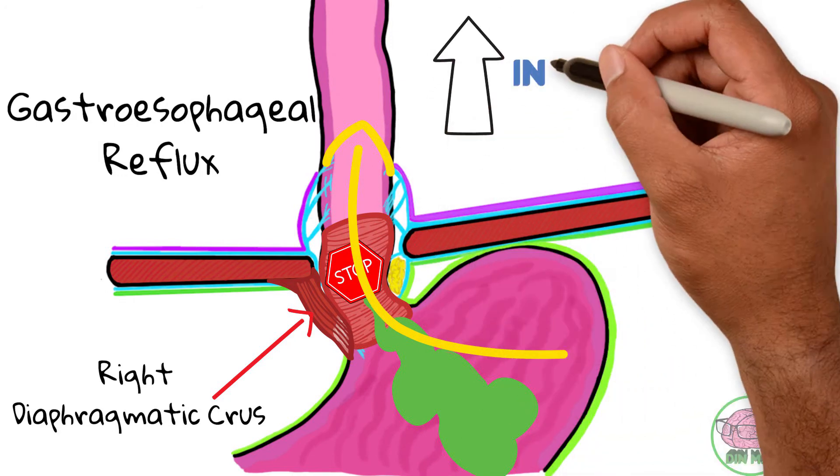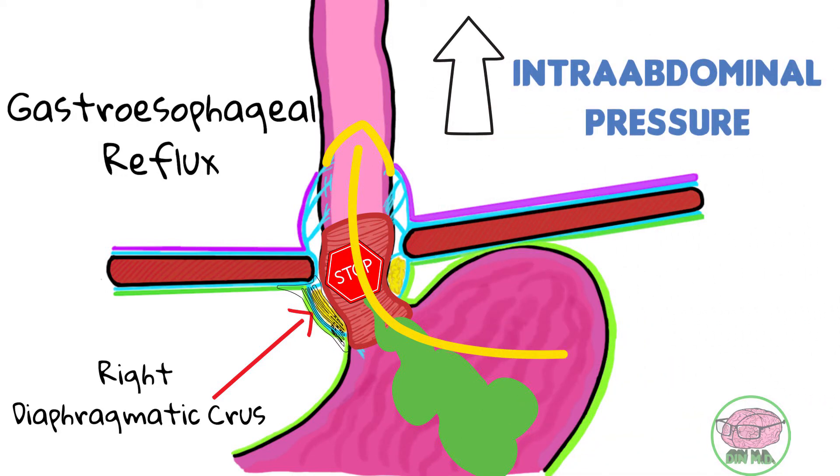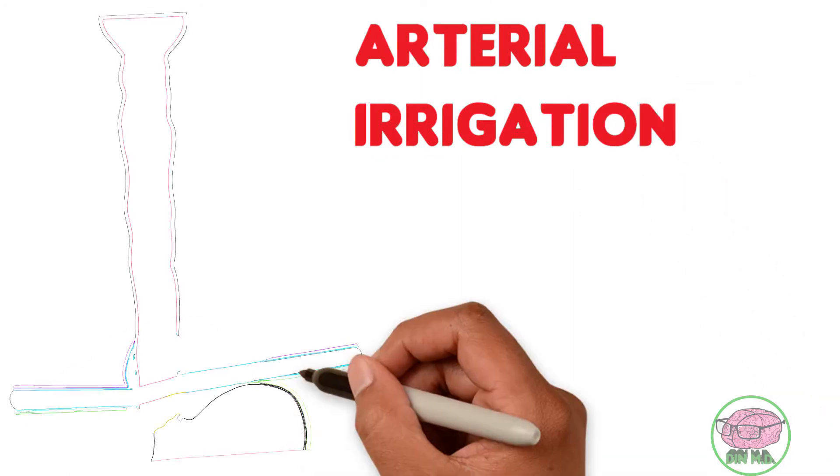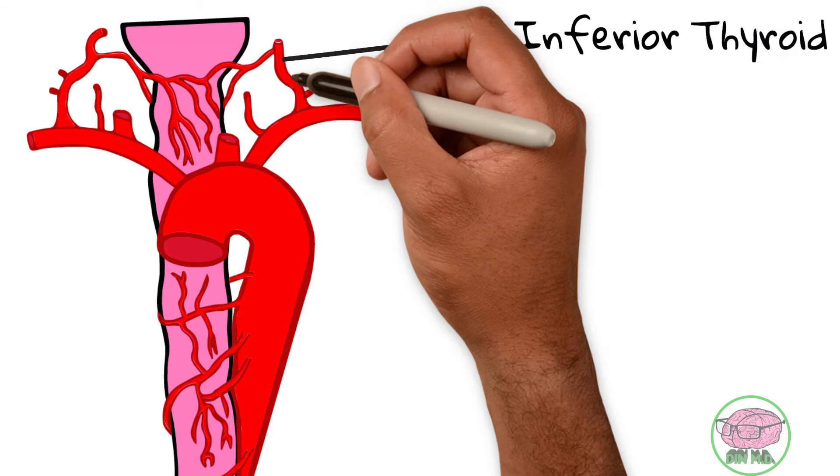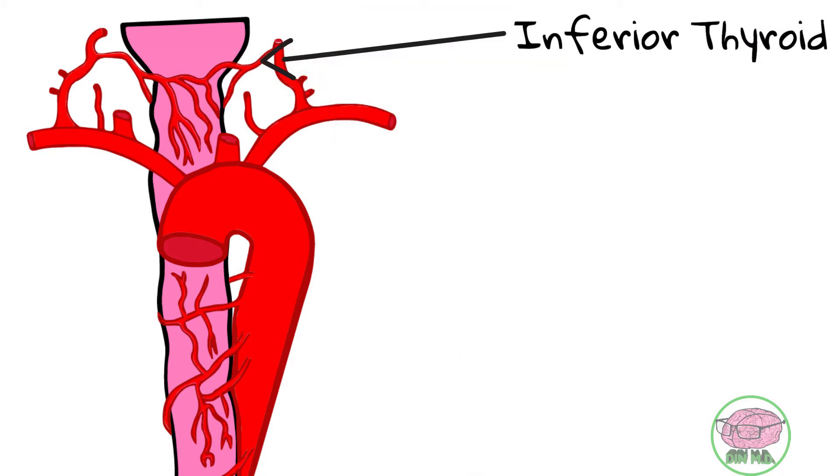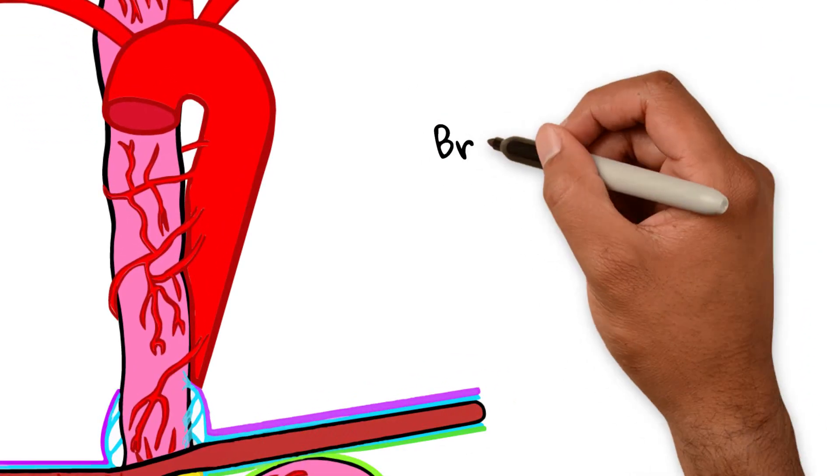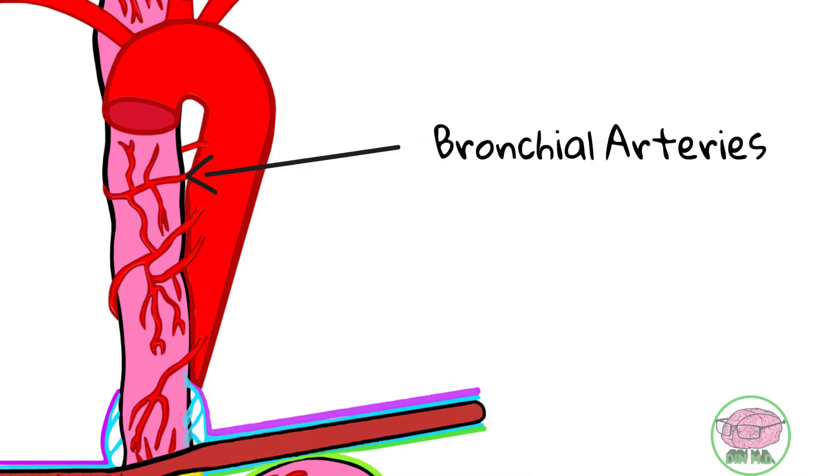When intra-abdominal pressure increases, the right cross of the diaphragm contracts and constricts the abdominal esophagus, preventing reflux. The cervical esophagus receives blood thanks to the inferior thyroid artery. This artery is a branch of the thyrocervical trunk which arises from the subclavian artery. The arteries for the thoracic esophagus are the bronchial arteries which also go to the lung and the esophageal branches that originate directly from the thoracic aorta.